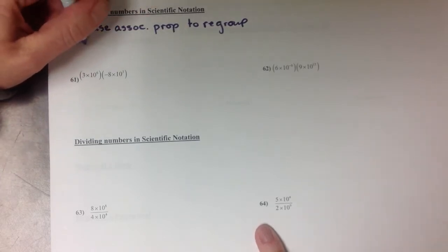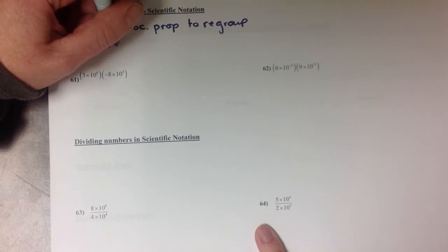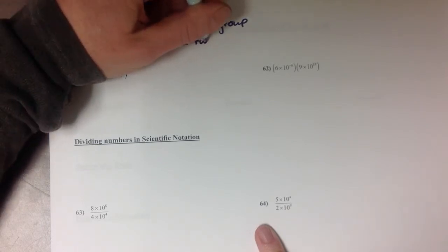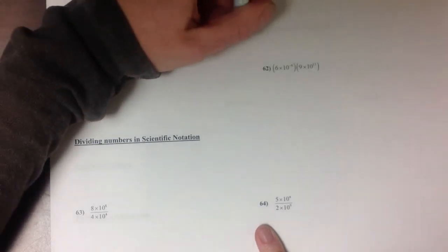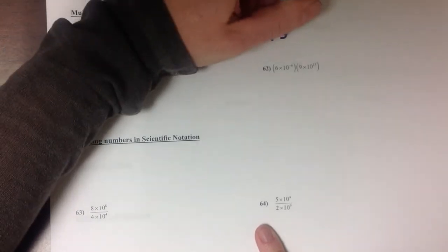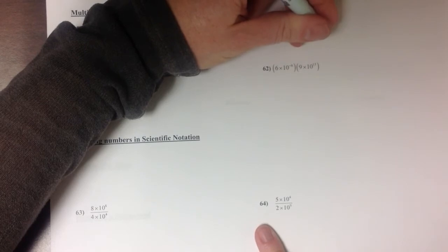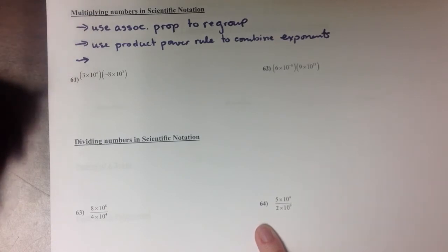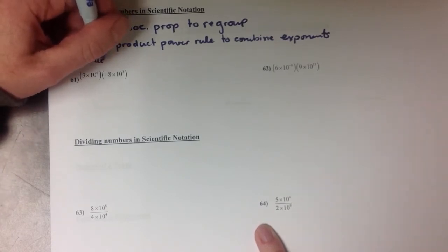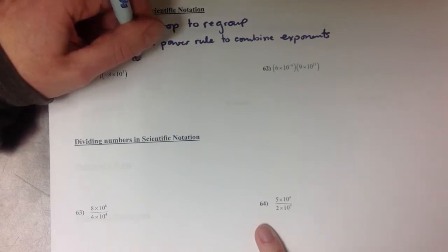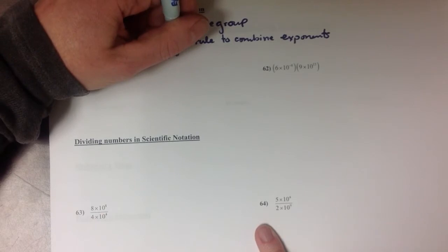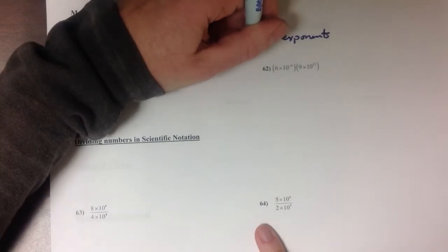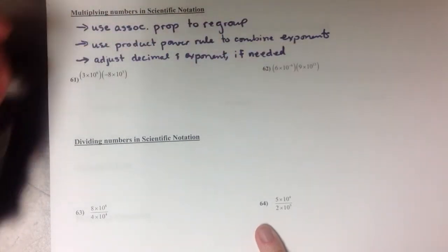And then use the product power rule to combine your exponents. And then as we saw in problems 57 and 58, if the result you get is not in scientific notation, adjust decimal and exponent if needed to make the number in scientific notation.